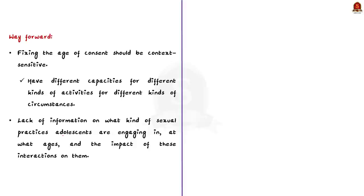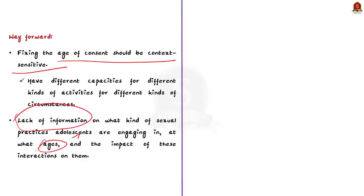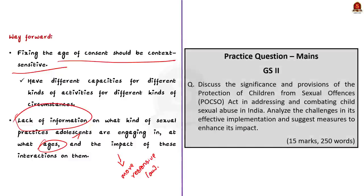The article gives some solutions to address the issue. The first is that the age of consent should be context-sensitive, which will help achieve a better understanding of the issue. The second solution is that there is a lack of information — there is no data about what kind of sexual practices adolescents are engaging in and at what age. If this information is gathered, the law can be made responsive to it. In this discussion, we saw the important provisions of the POCSO Act 2012, the issues with the age of consent in India, and two solutions to address the issue.